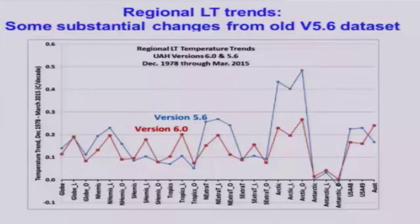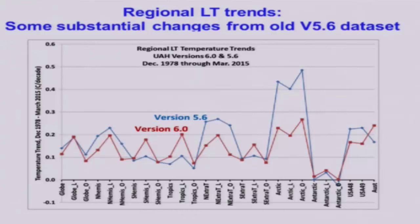This is a plot of trends for different locations — the horizontal axis is just different locations. For instance, the left end is global trends, then global land, global ocean, and so on. This shows how our old version 5.6 dataset's trends have changed with the new version 6 — and there are some pretty big changes, like in the Arctic. The new version 6 has basically cut the warming trend in the Arctic in half. The Antarctic is the only region that shows basically no warming trend at all, which is qualitatively consistent with the fact that rather than sea ice decrease around Antarctica, there's actually been a sea ice increase. But these numbers are very uncertain because of difficulties in measuring around Antarctica and elevated ice sheets.